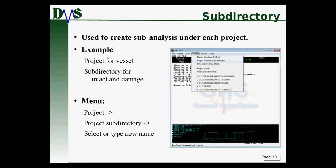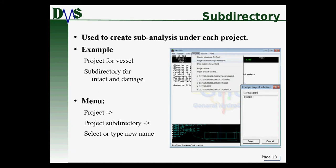For subdirectories: say a client asks you to do a stability analysis for a ship. That stability analysis might have several sub-projects — intact, damage, floodable links. All of that falls under one project, but you specify a project subdirectory for each. To do that, go to the project menu and select project subdirectory. A dialog comes up where you can select existing examples or type in a new directory name.